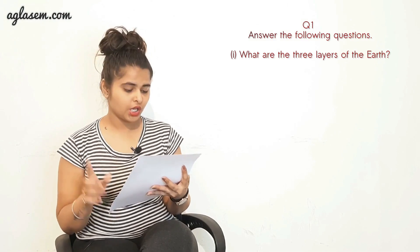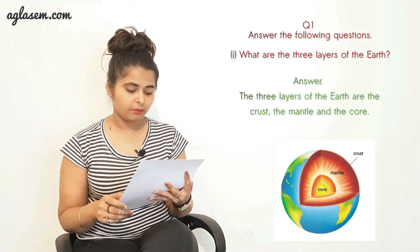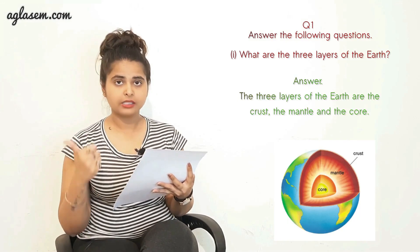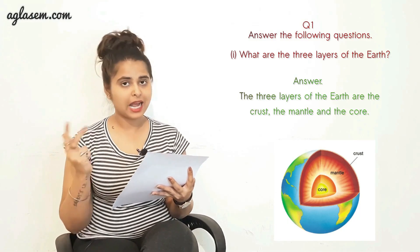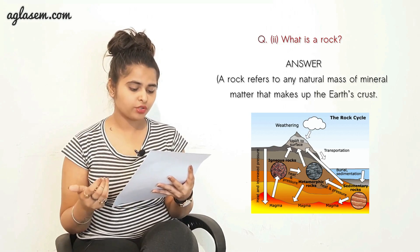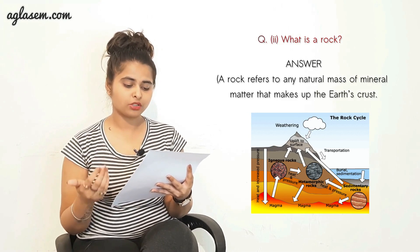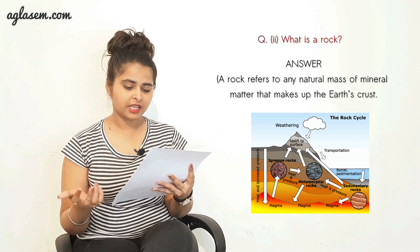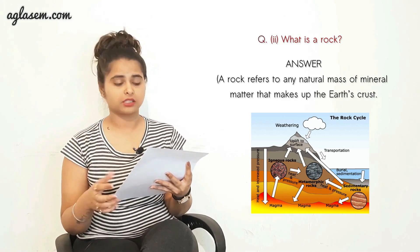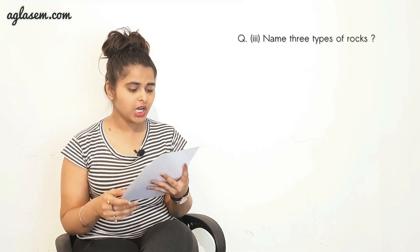The first question: Answer the following questions. Part one - What are the three layers of earth? The three layers of earth are the crust, the mantle, and the core. Part two - What is a rock? A rock refers to a natural mass of mineral matter that makes up the earth's crust.